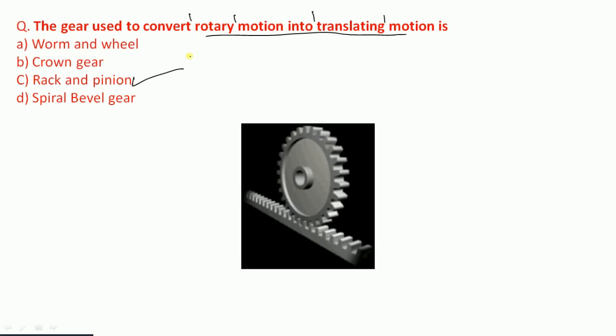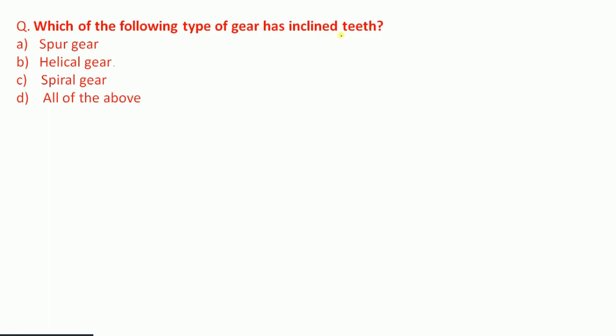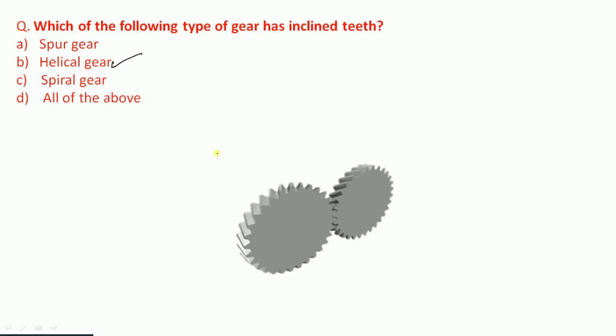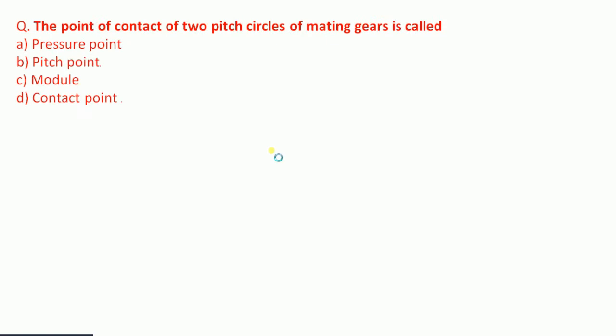Question 3: Which of the following types of gear has inclined teeth — spur gear, helical gear, spiral gear, or all of the above? The helical gear has inclined teeth, as you can see in the figure where the teeth are inclined.